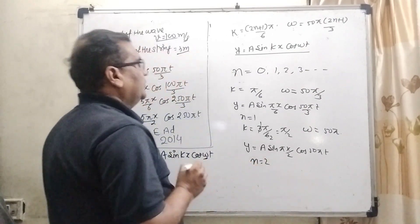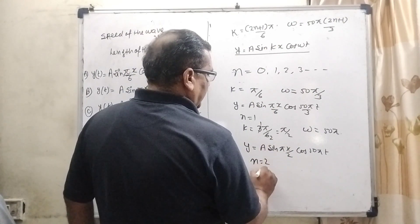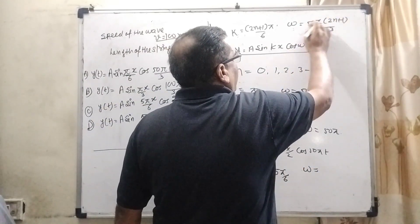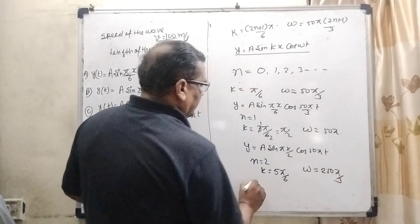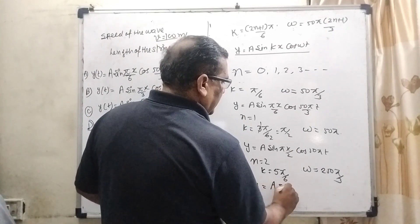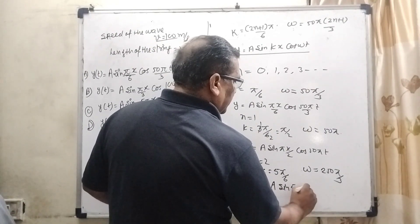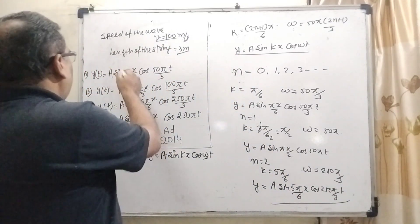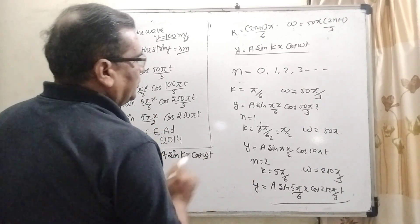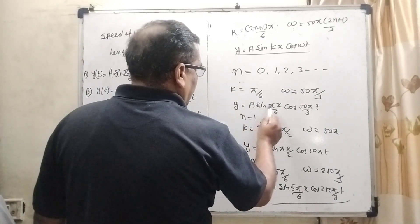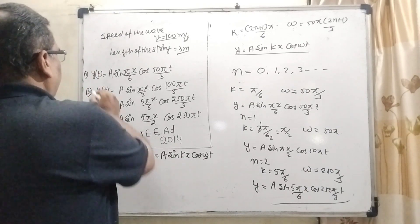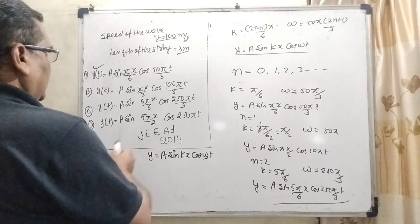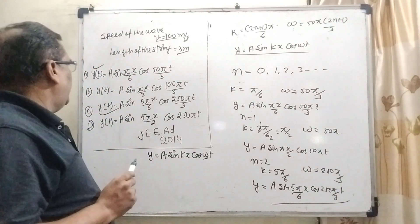When n equal to 2, if we put here then 2 times 2 is 4 plus 1 is 5. Then k equal to 5 pi by 6. Omega: when 2 times 2 is 4 plus 1 is 5, 5 into 50 is 250 pi by 3. Now put the value in equation: y equal to a sin 5 pi x by 6 cos 250 pi t by 3. Next value is not required because our options match. Let us see which option is matched. First: a sin pi x by 6 cos 50 pi t by 3 - the first option is matched here. And a sin 5 pi x by 6 cos 250 pi by 3 - the c option is matched here. So a and c options are correct.